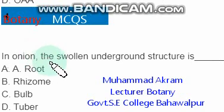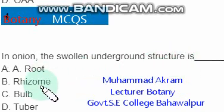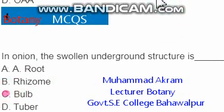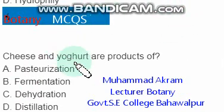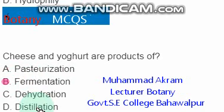In onion, the swollen underground structure is called a bulb — option C is correct. Cheese and yogurt are products of fermentation — option B is the right option.